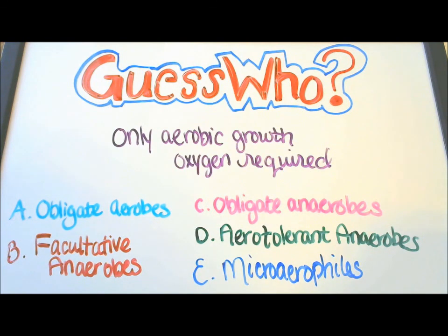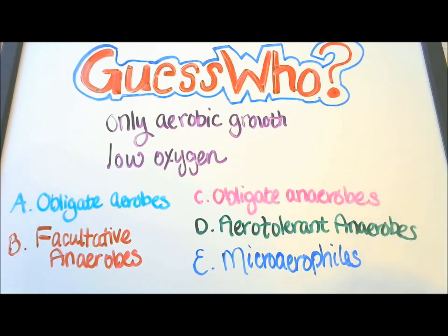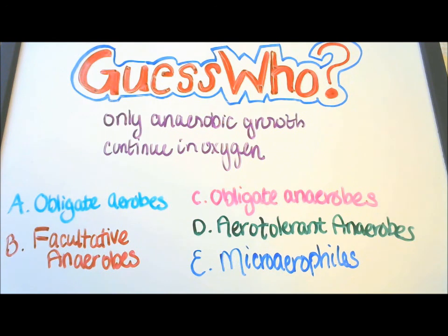Welcome to Micro Guess Who! Clue number one: only aerobic growth and oxygen is required. Clue number two: only anaerobic growth and no oxygen is required. Clue number three: only aerobic growth and low oxygen is needed. Clue number four: there's aerobic and anaerobic growth and there's greater growth in oxygen. Clue number five: only anaerobic growth but can continue to grow in the presence of oxygen.